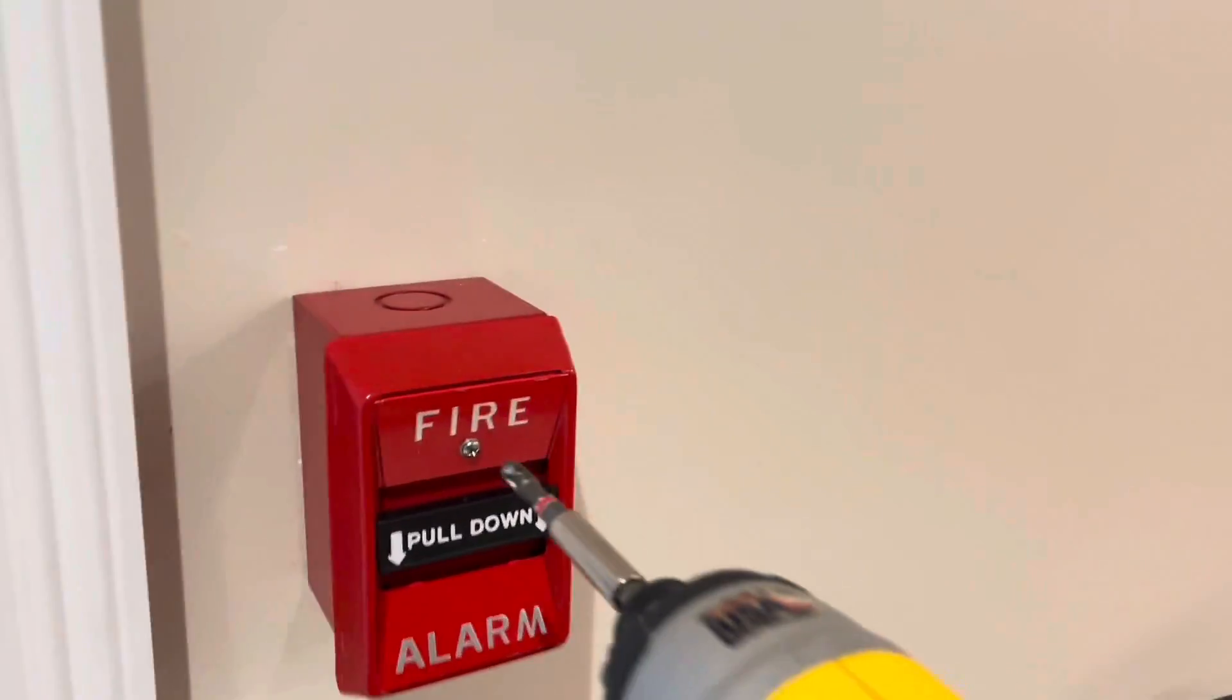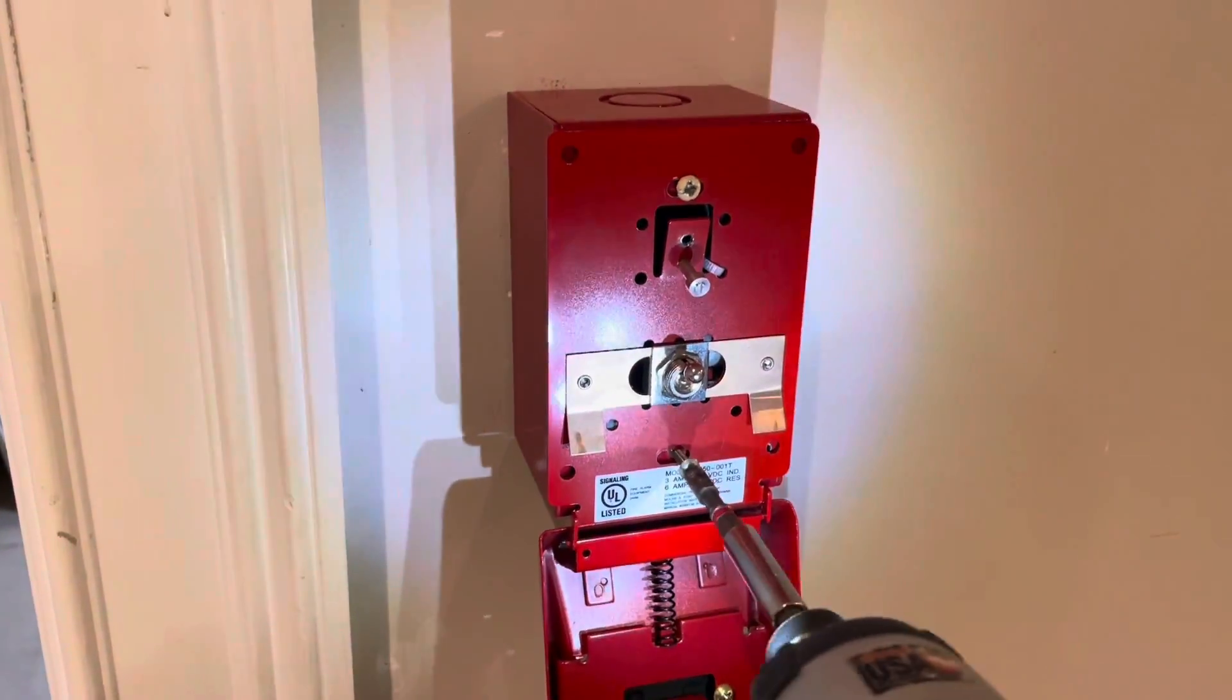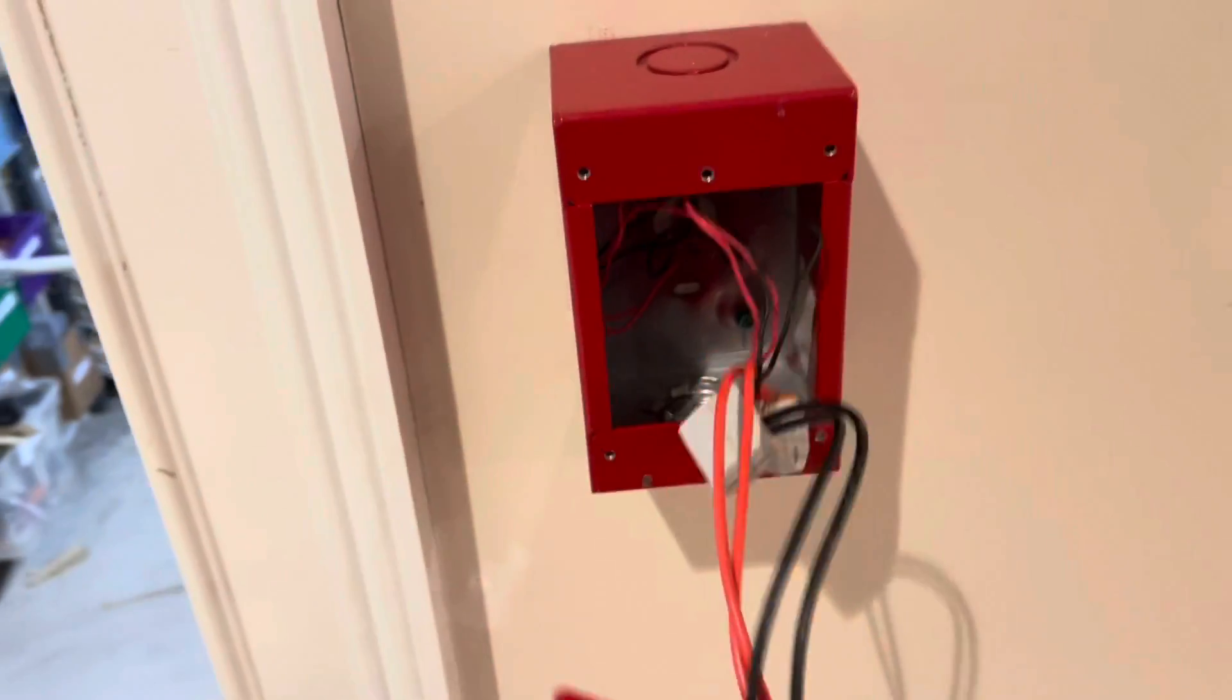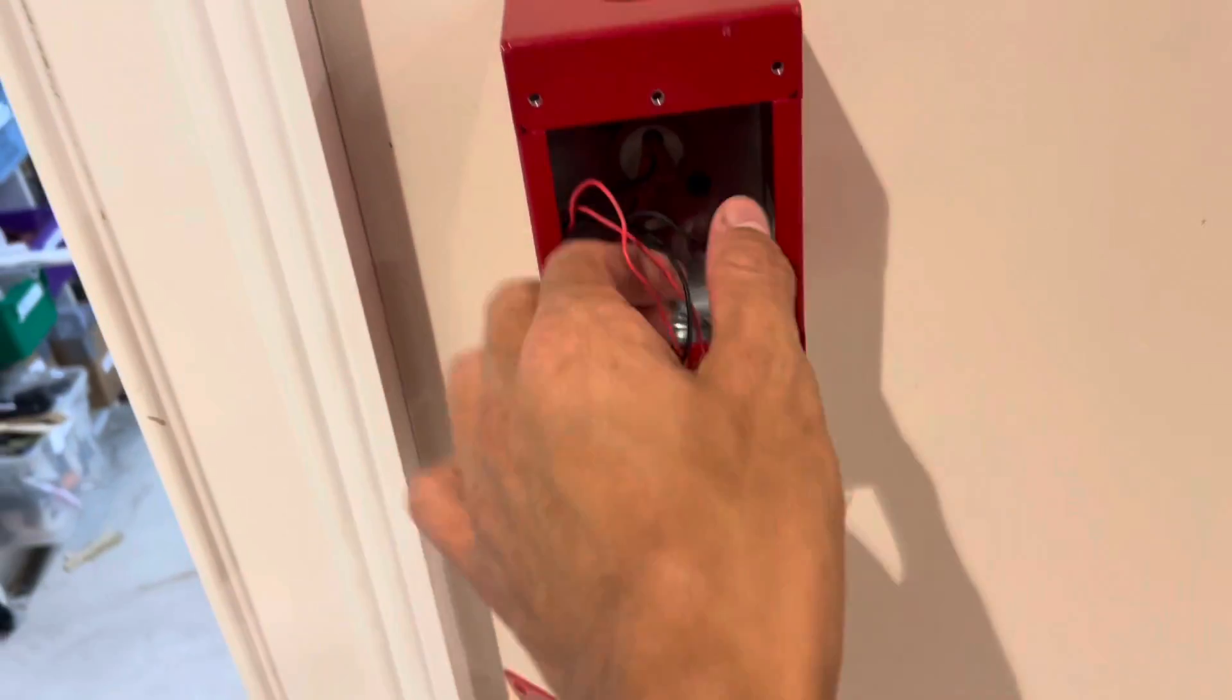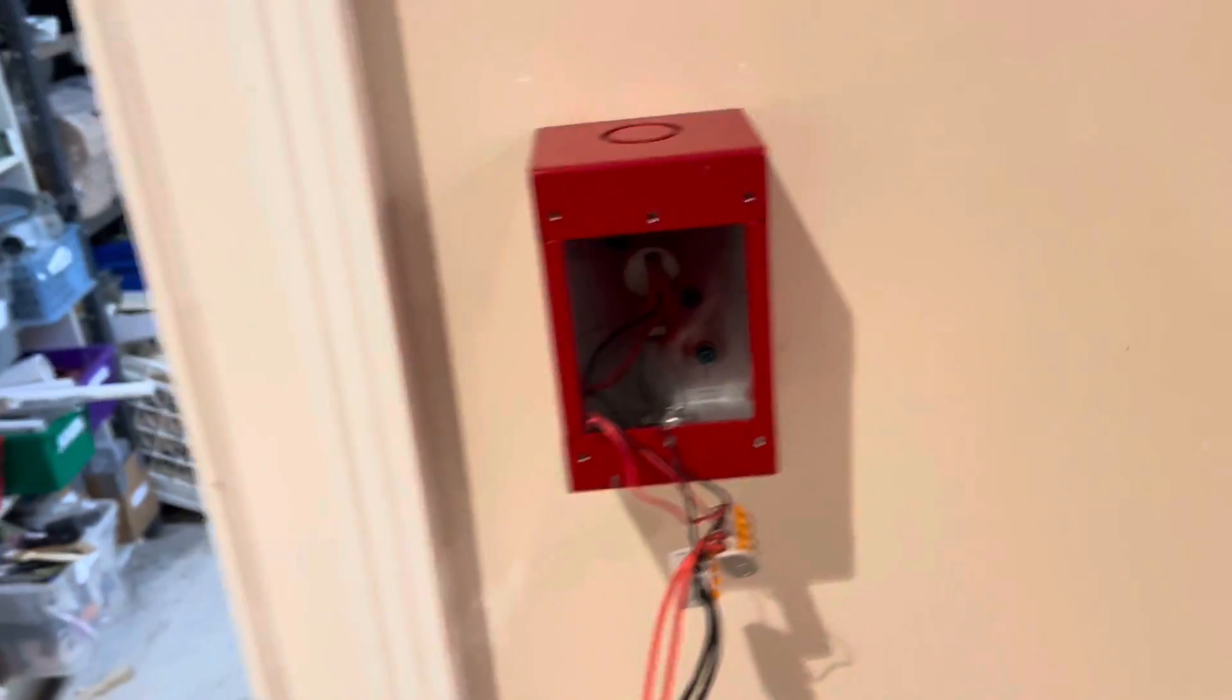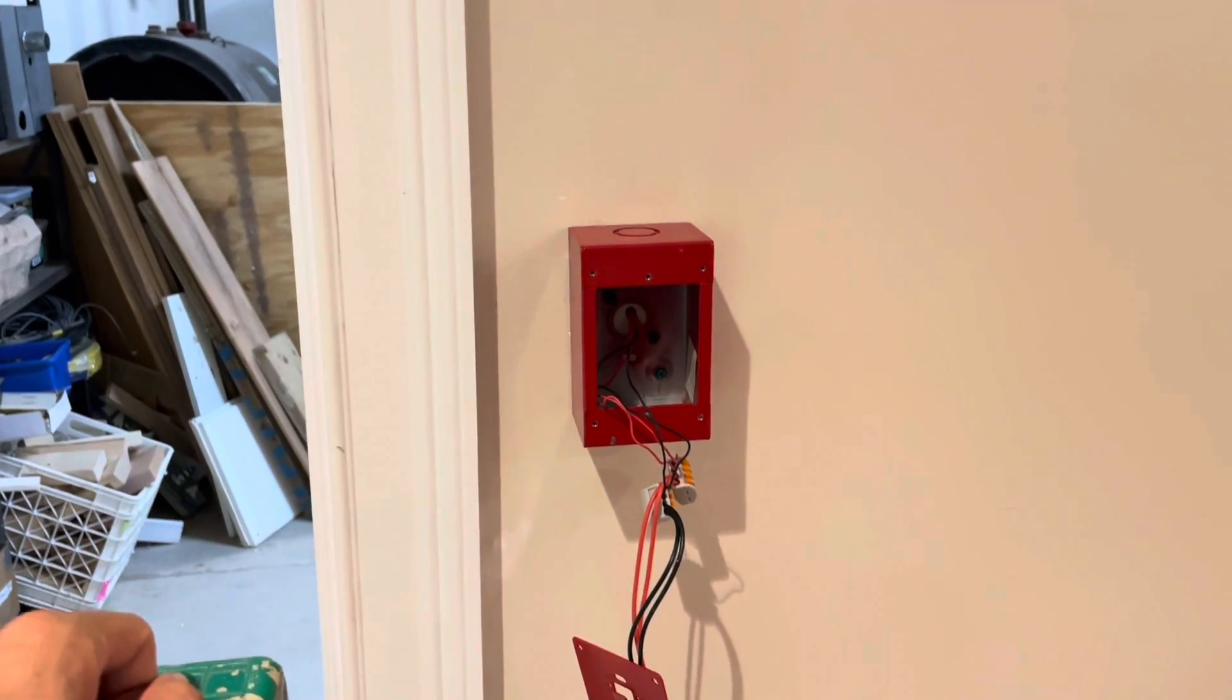Let's start removing the pull station so I'll just undo the screw right here. Once again this pull station is wired with Wagos so all I have to do is remove those tabs. Also I'm going to be installing a simplex specific back box just because it looks better. In this case obviously this box would fit any simplex pull station but just for the sake of appearance.